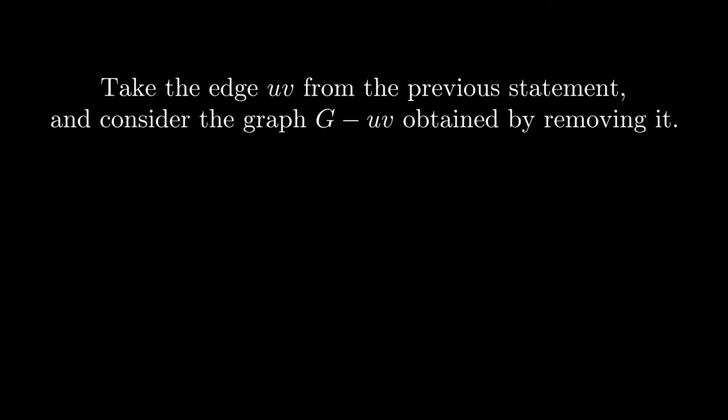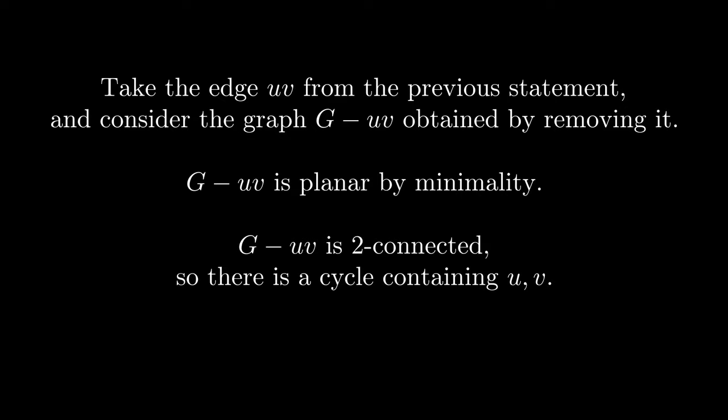We are now ready to prove the theorem. Consider the graph G minus uv obtained by removing the edge from the last statement. This graph is planar due to the minimality of G. It is also two-connected, so by our earlier lemma there must be a cycle containing u and v.